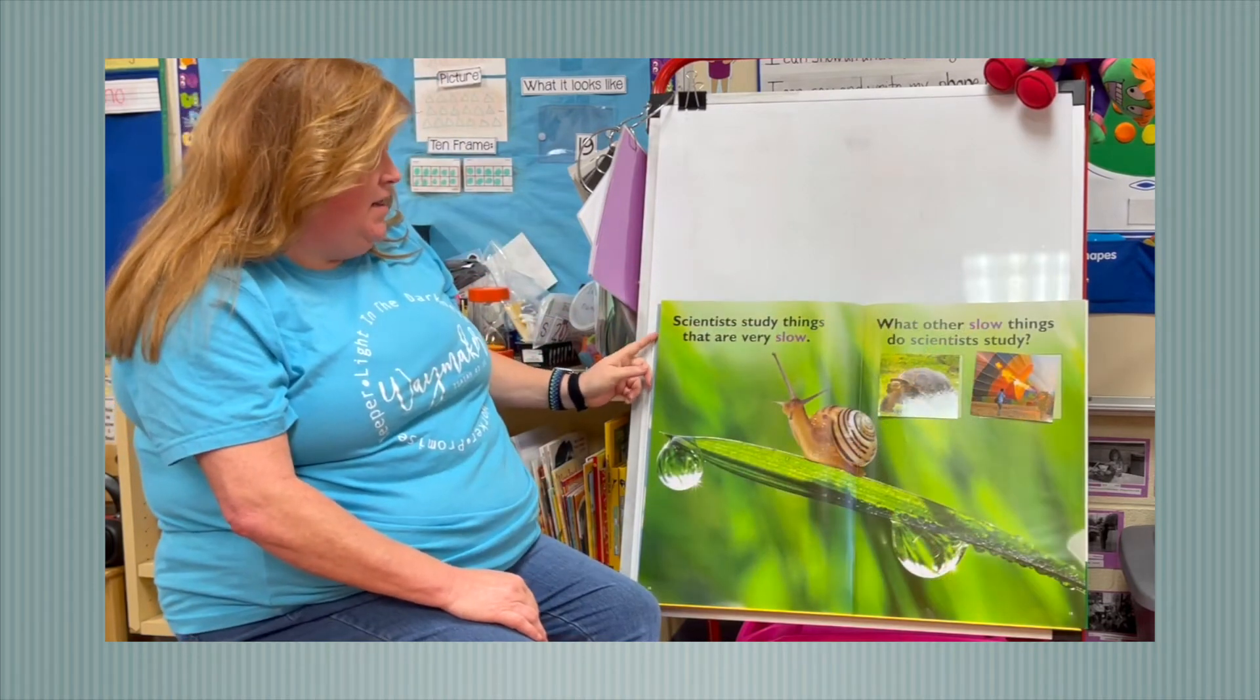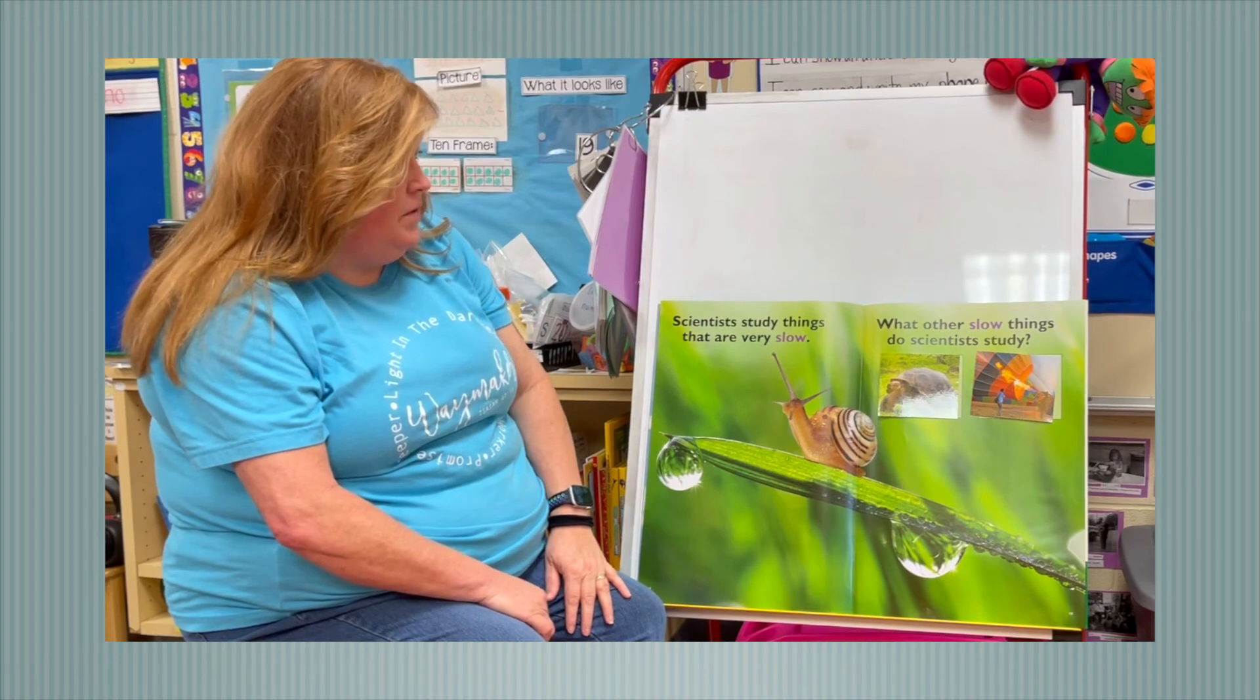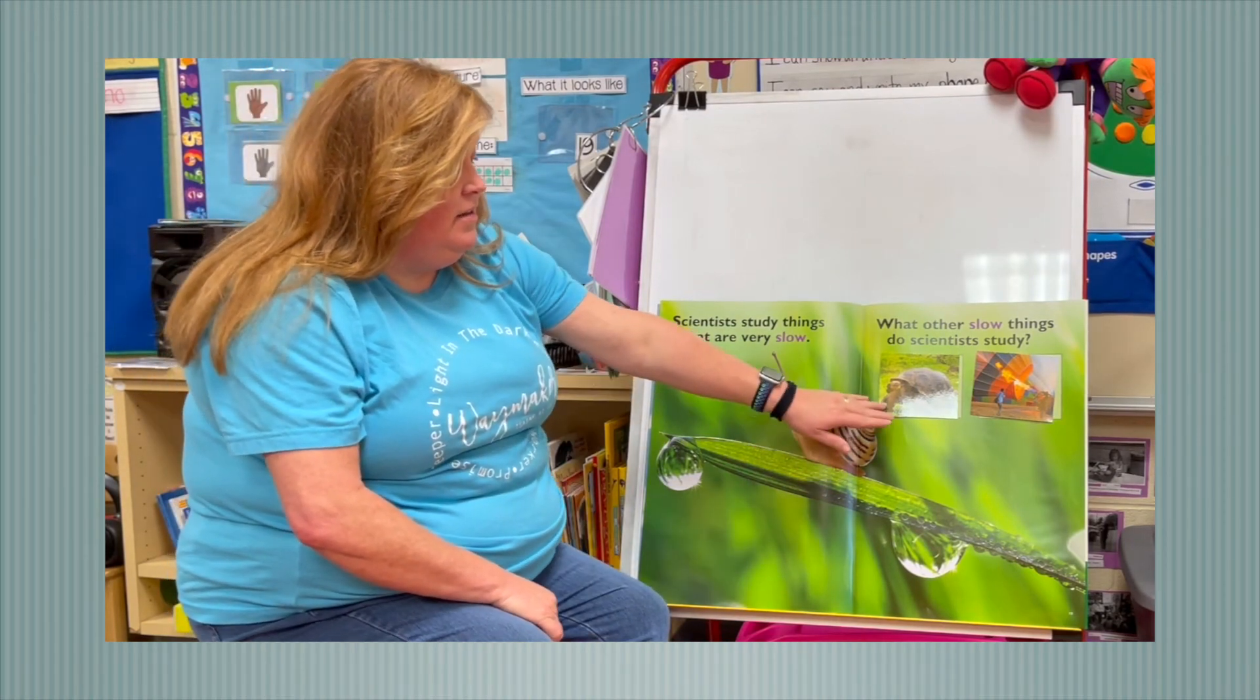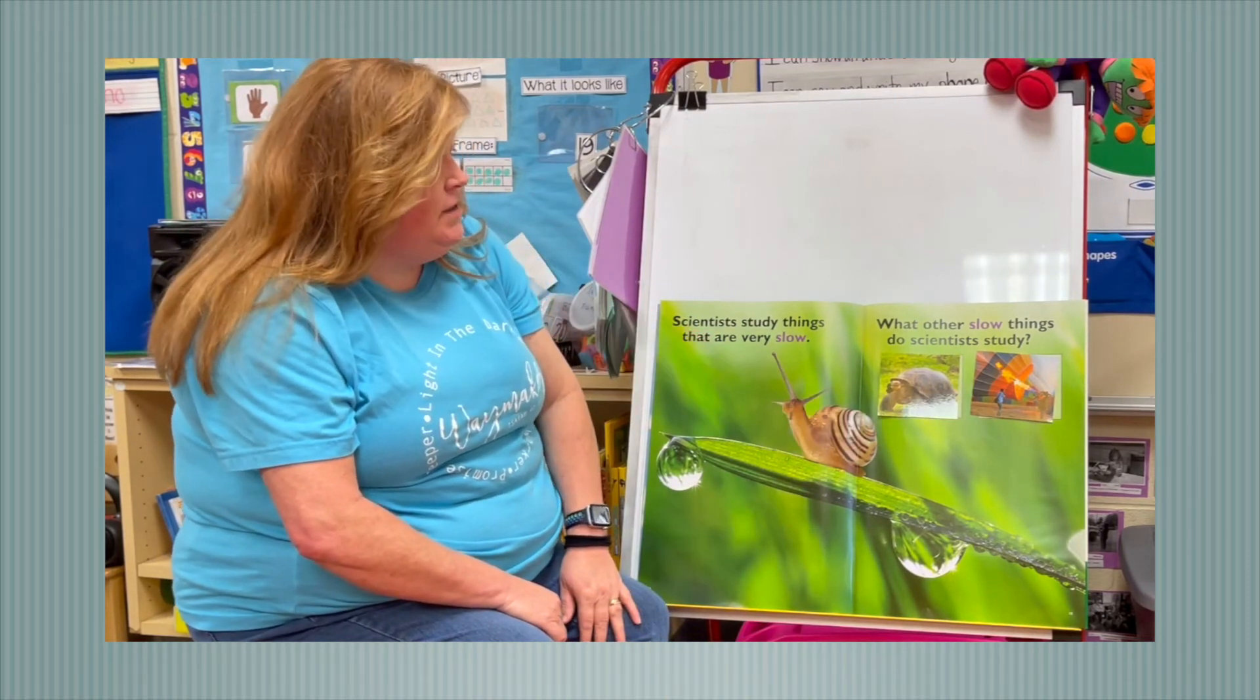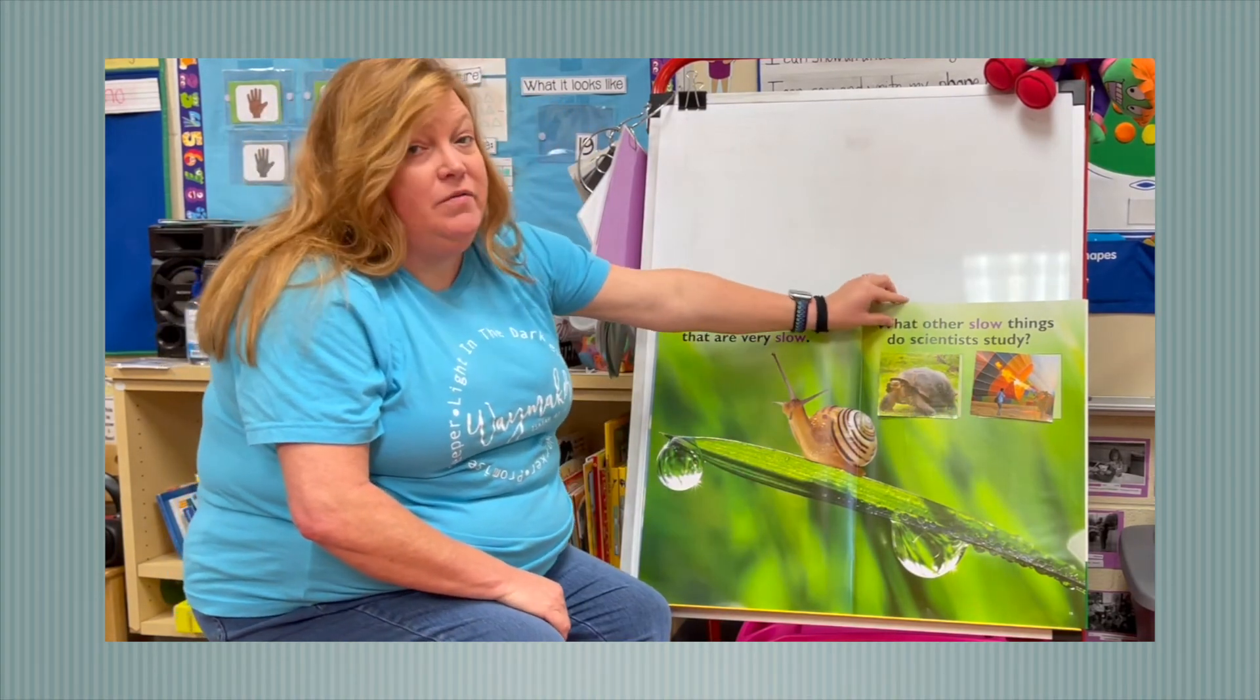Scientists study things that are very slow. Like this little snail. He's slow. What other slow things do scientists study? There's a tortoise. He's old and slow. And then we have a hot air balloon. They move slow.